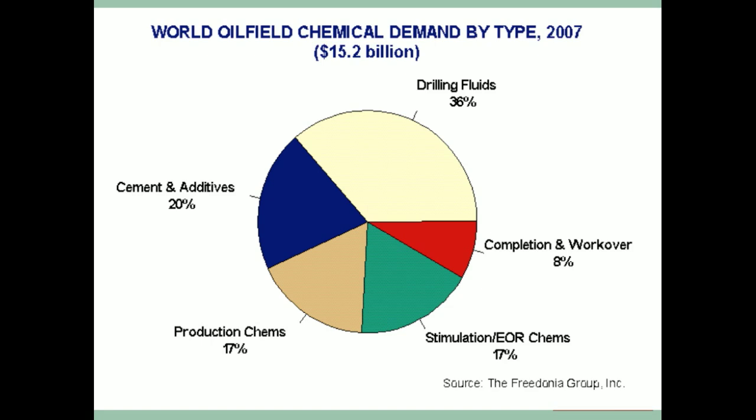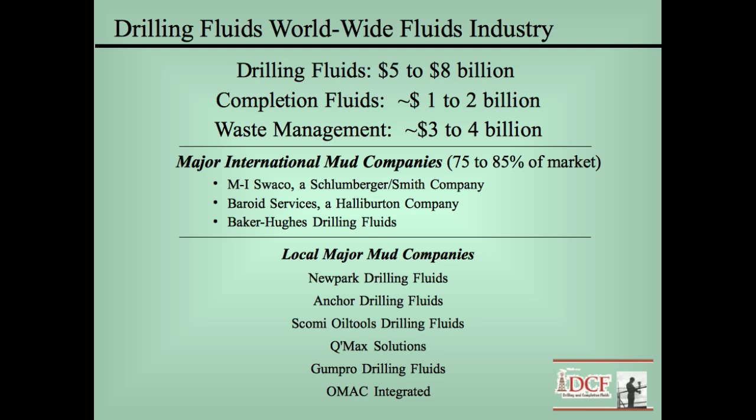In 2007, the world's oil field chemical demand was over $15 billion. About 36% of that was for drilling fluids. The rest was for cement, completion, stimulation, and production chemicals. It is estimated that the drilling fluids business grosses from $5 to $8 billion per year. This varies according to the rig count and the price of oil.